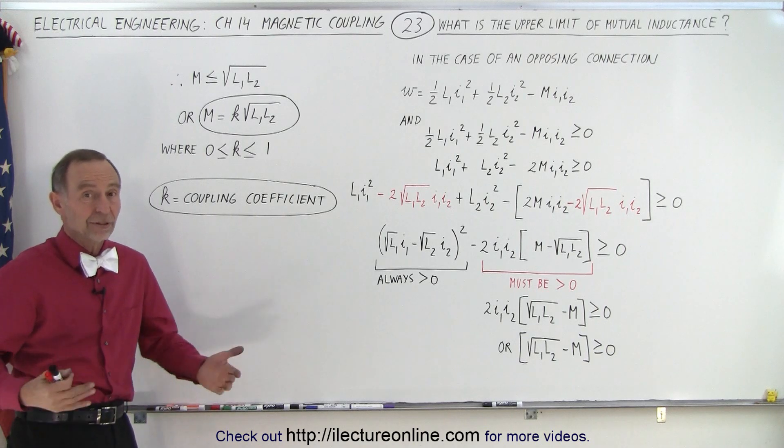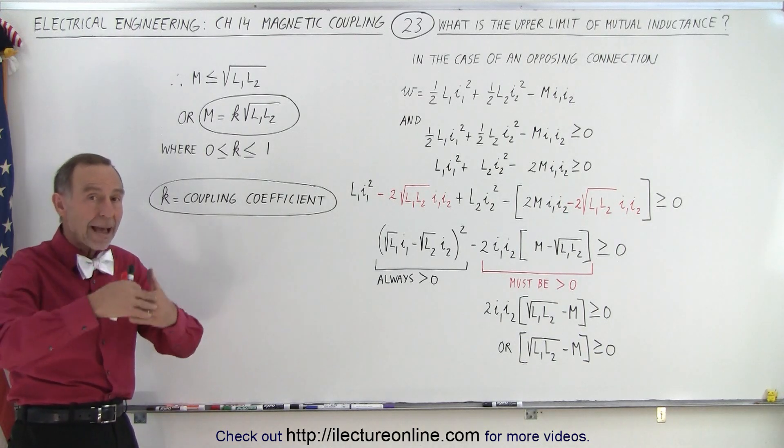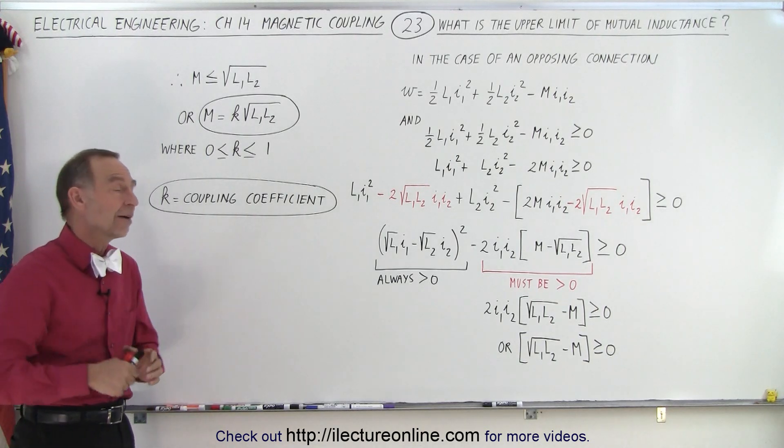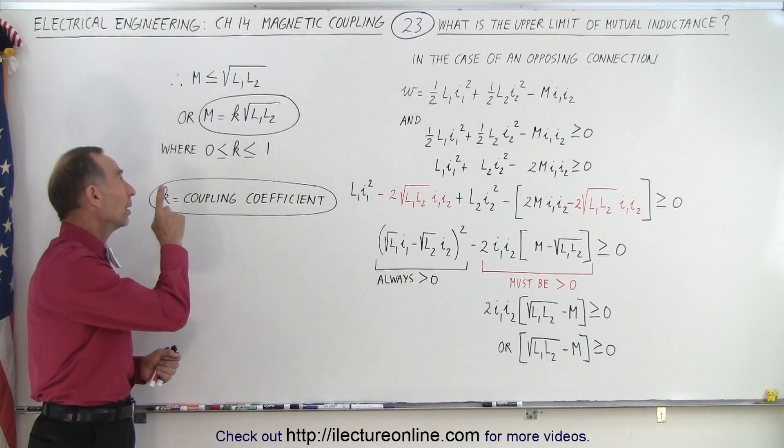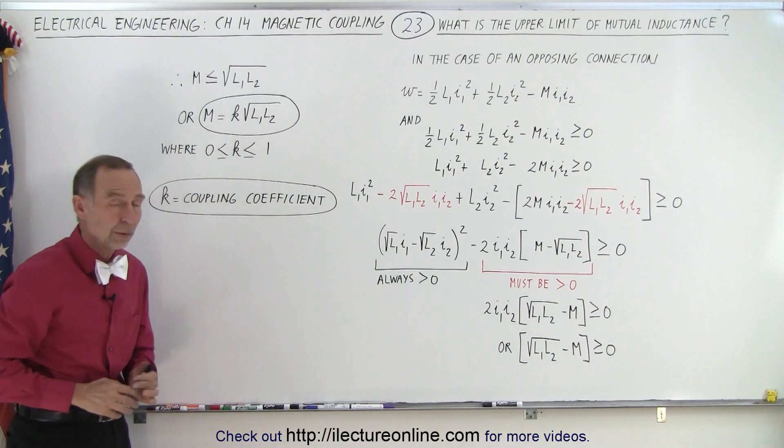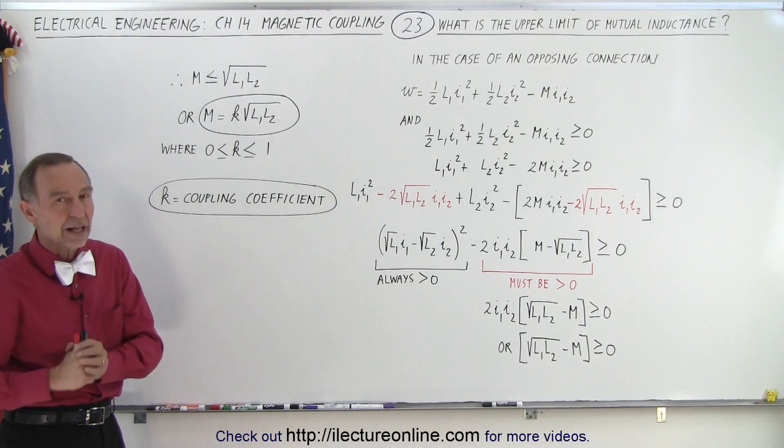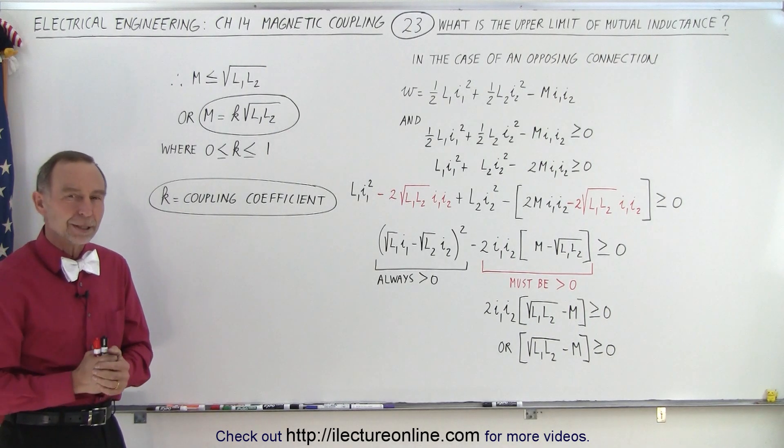Self-inductance is all you've got, and the max amount of mutual coupling you can have occurs when k equals one, where M is equal to the square root of L₁ times L₂, and that's the limiting value of the mutual coupling.